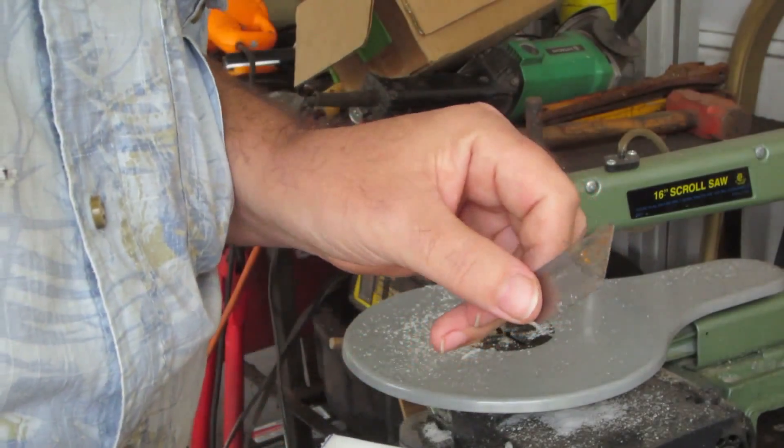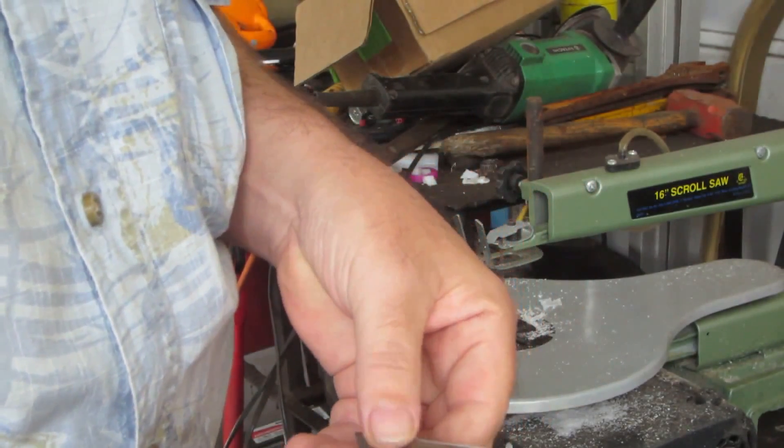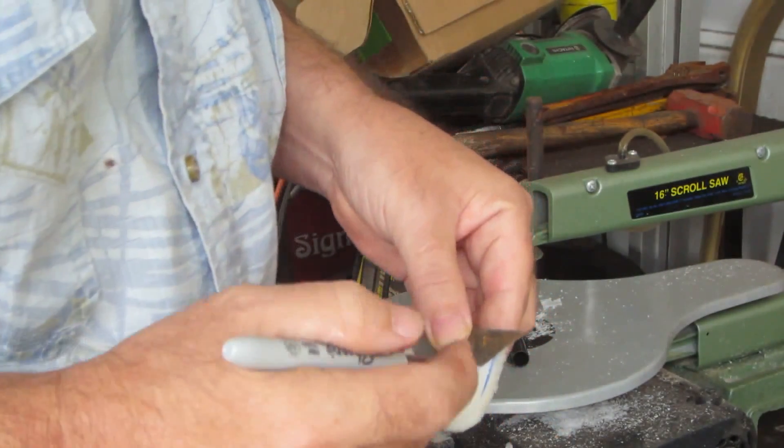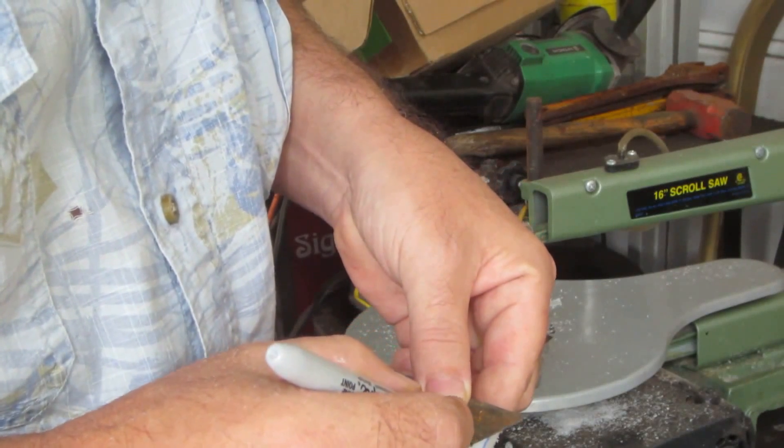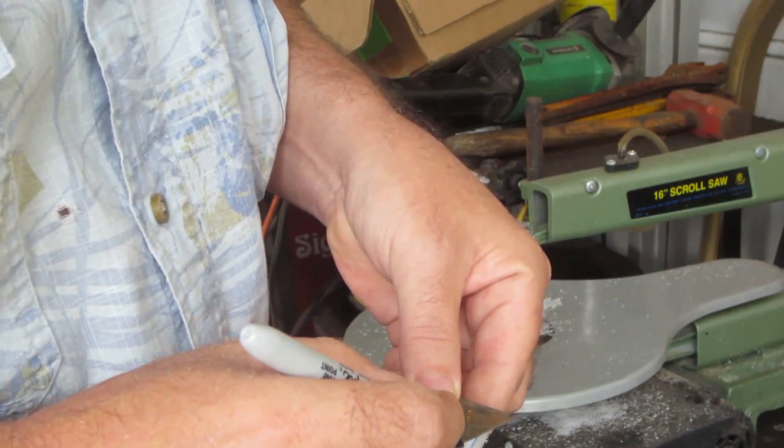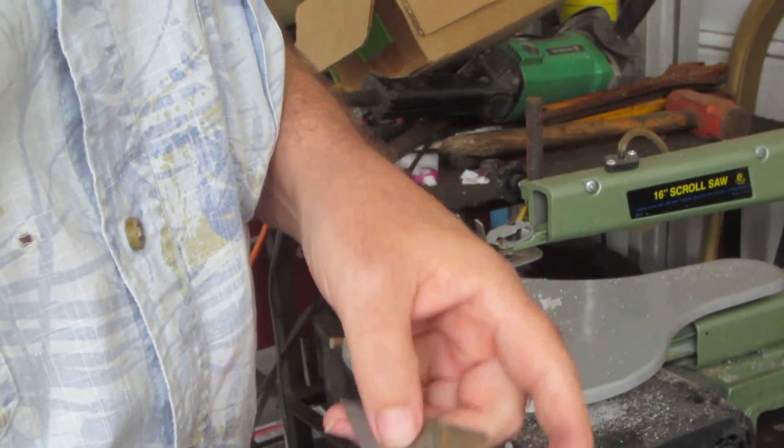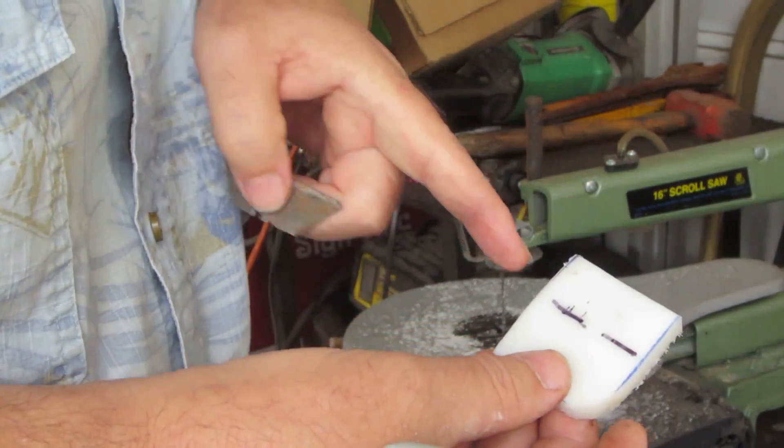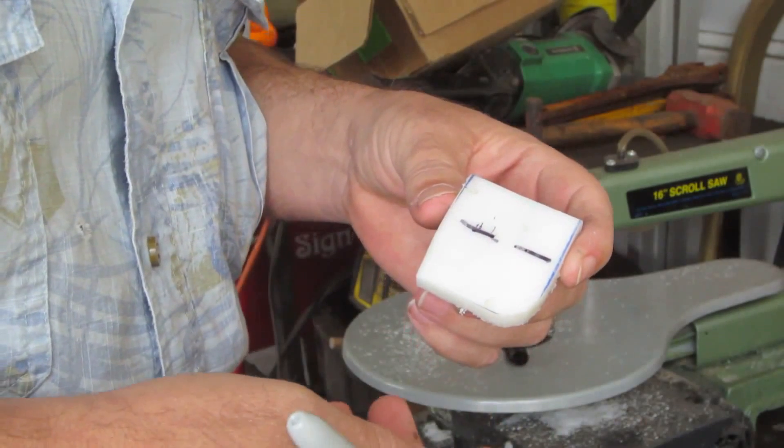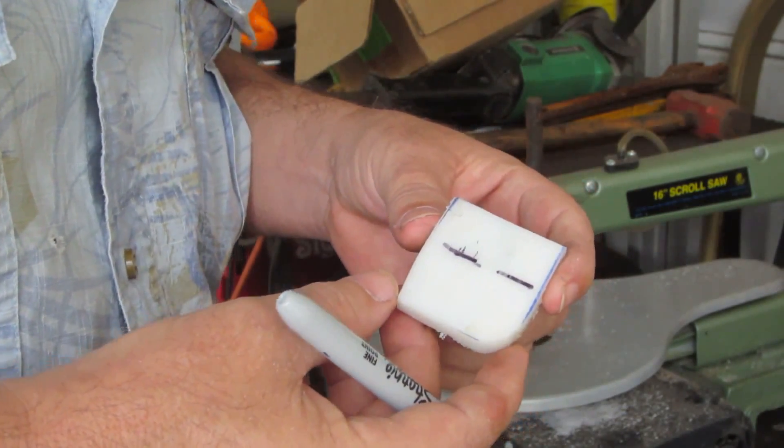I'm going to take an old utility knife blade and mark me out a length that I need to cut it down to, somewhere like that. I'm going to cut this off. I'm going to make myself a bracket to mount this onto my pistol grip.